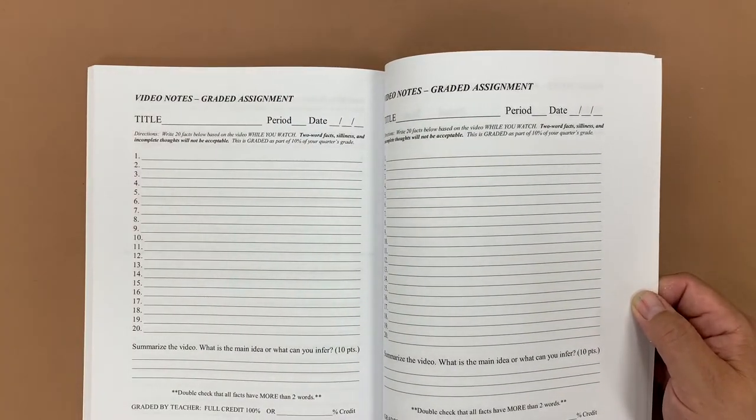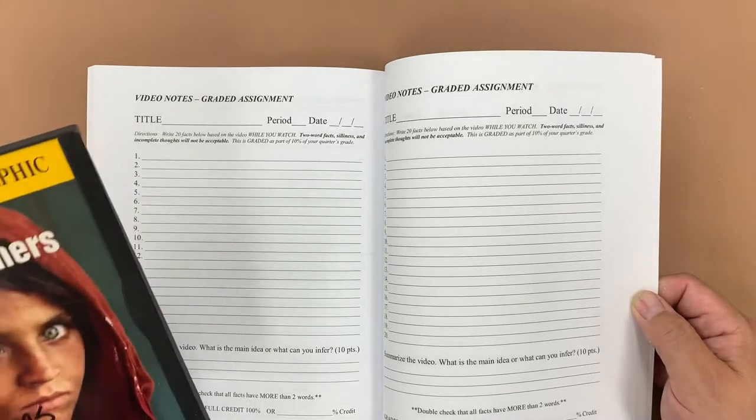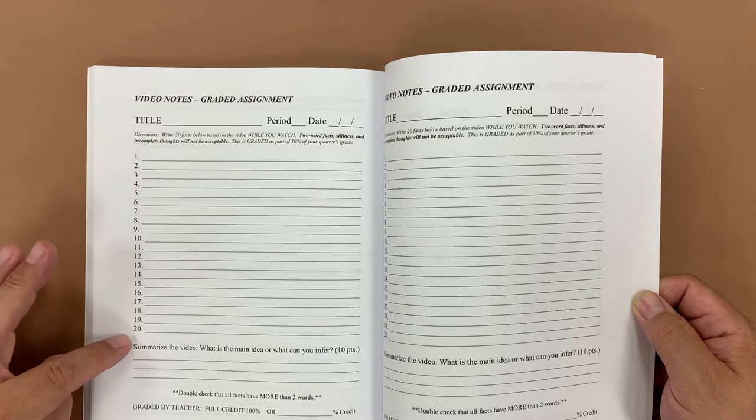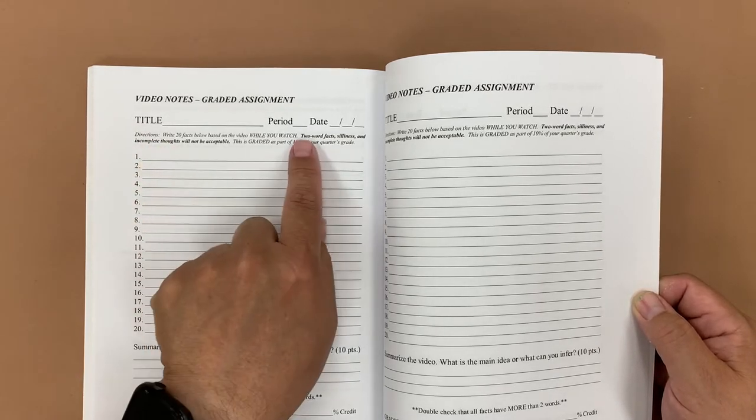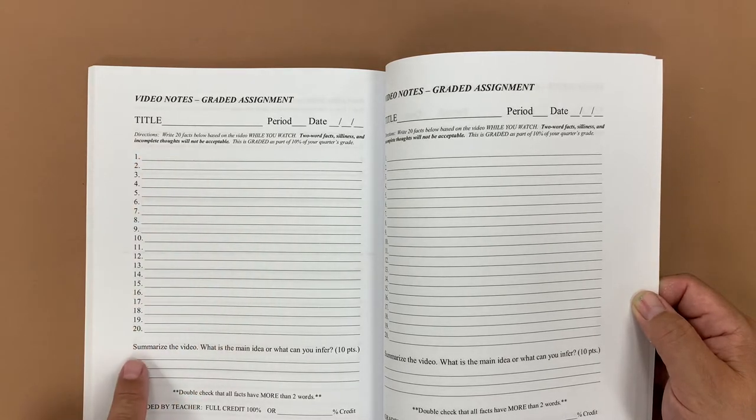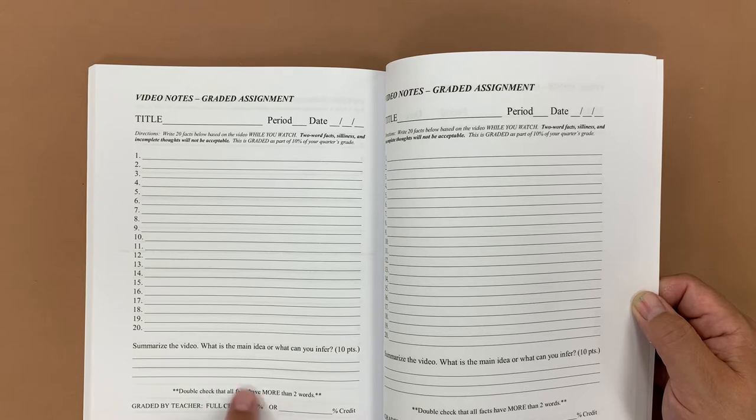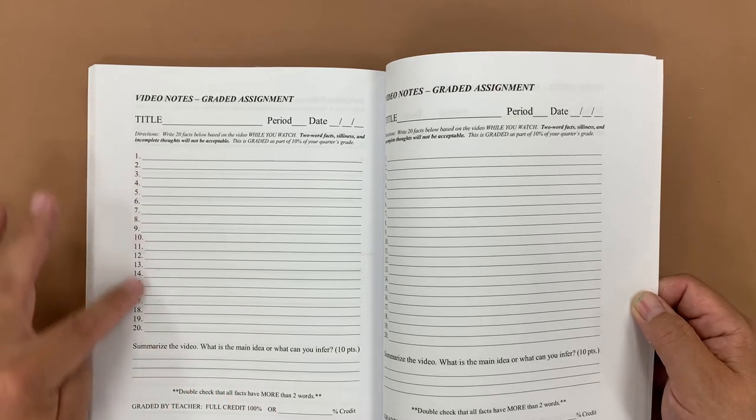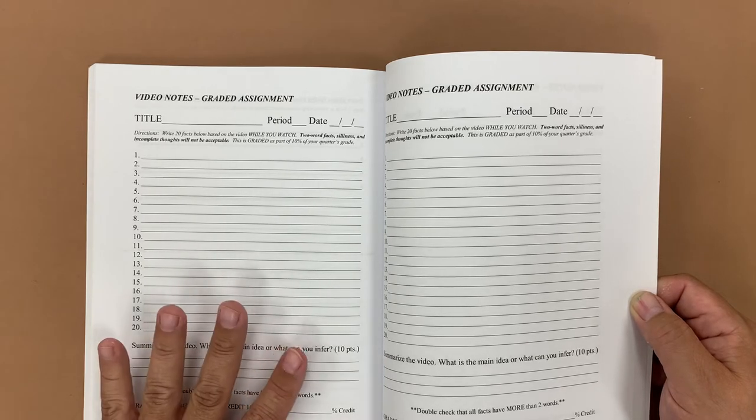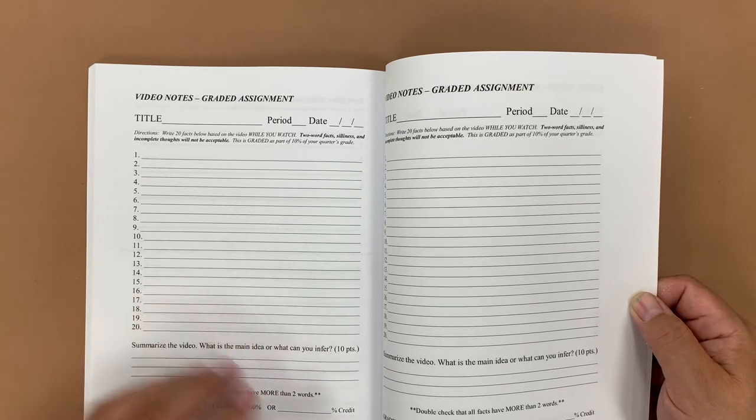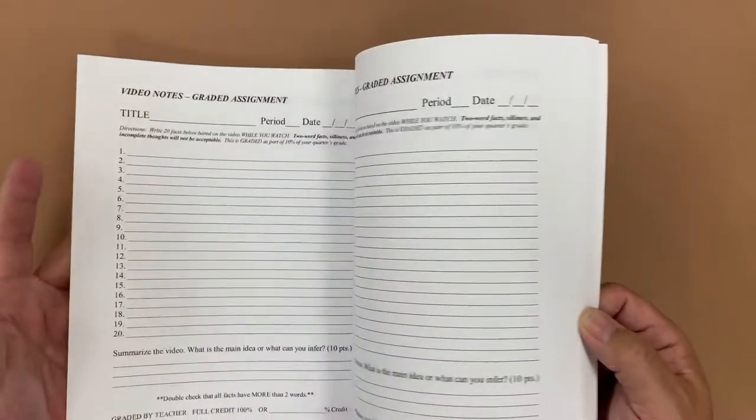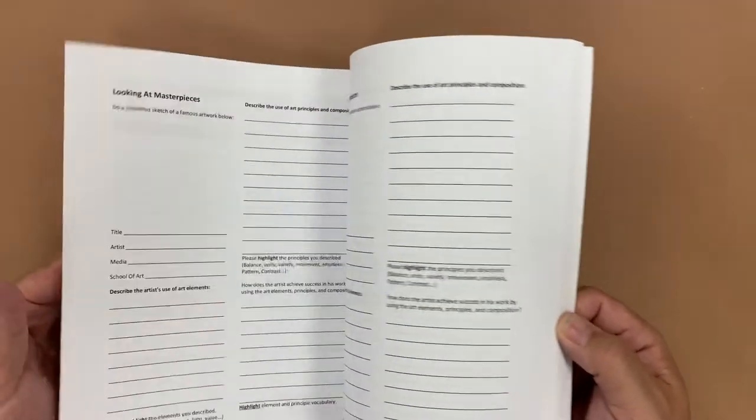So sometimes if I'm going to be out for a day, I might assign a video for the sub to play, and then the students would write 20 facts about what they see. Up here it says the two-word facts and silliness, incomplete thoughts will not be acceptable. And then summarize the video down here, and you can circle full credit for 100% if they did do the task or a percentage that they did and participated. So this has been really helpful on my sub days. And usually I will use a video that's tied to whatever the current project is that I've assigned students or a particular concept that we're covering that week.